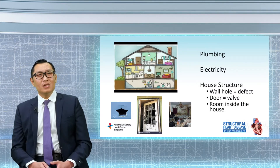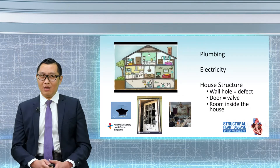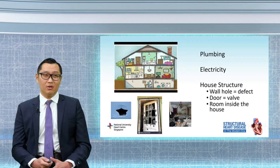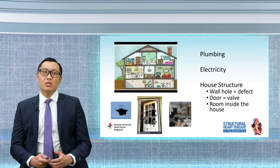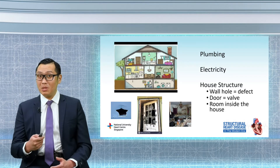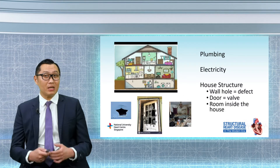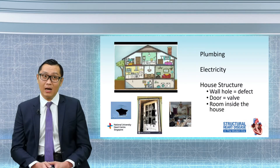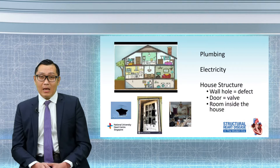I like to use an analogy when I explain a heart problem to my patients, because sometimes it can be very complex. I tell my patients: imagine your heart is like a house. You can have a problem with your plumbing, a problem with your electricity, or a problem with the house structure itself — a hole in the wall, a problem with the doors, or a problem with the rooms inside. A plumbing problem is like having a blockage in your heart artery, which is when people need ballooning or stenting. An electricity problem is commonly known as having an irregular heartbeat.